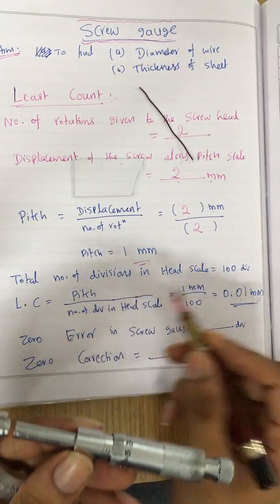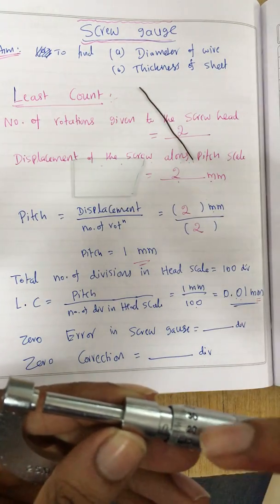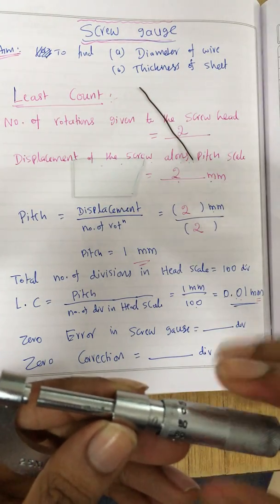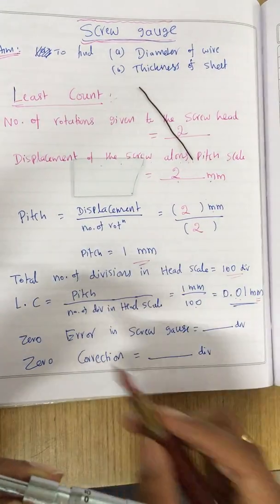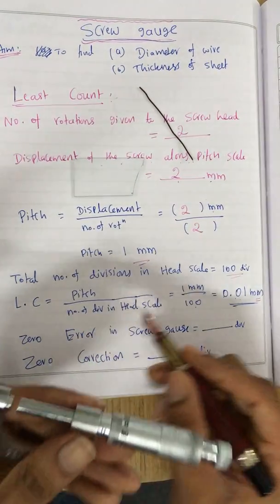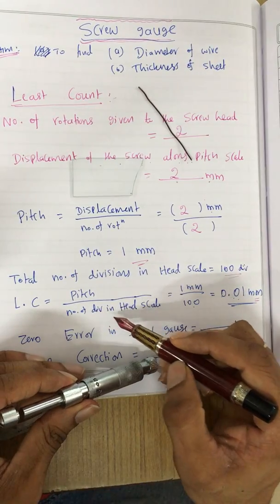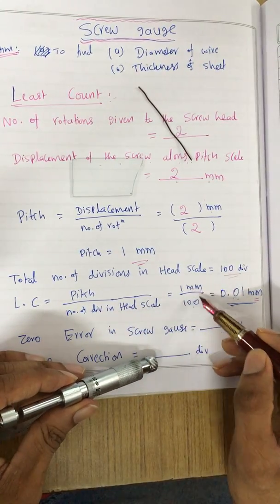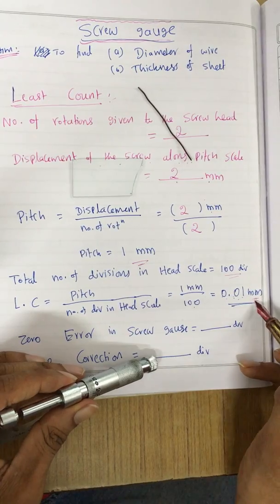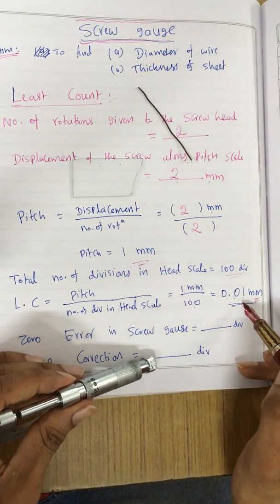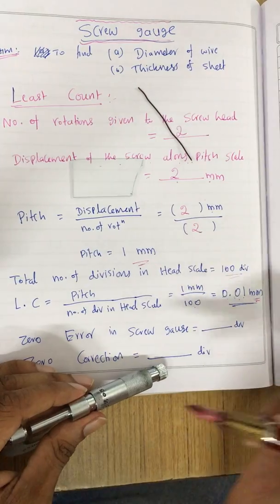Total number of divisions on the head scale: 0, 10, 20, 30, 40 — so total you have 100 divisions. To find the least count, the formula is: pitch divided by number of divisions on head scale = 1mm divided by 100 = 0.01mm. For all screw gauges the least count is the same because number of divisions on the head scale is 100 and pitch is the same.